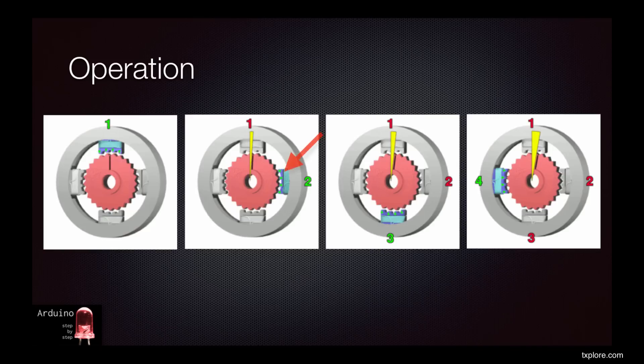In the second image, the first electromagnet is de-energized, and the second is energized. As a result, the rotor advances by one step so that its teeth are again appropriately aligned with the new electromagnetic force.